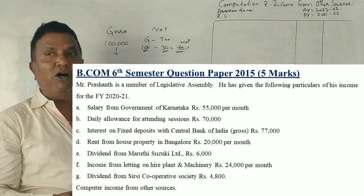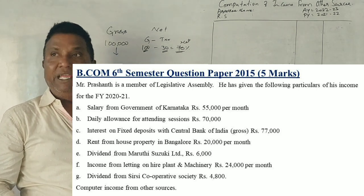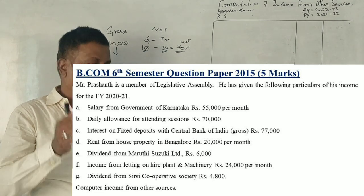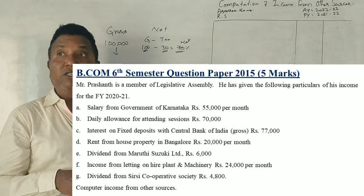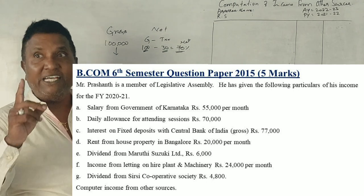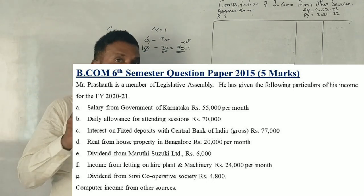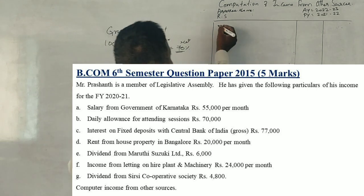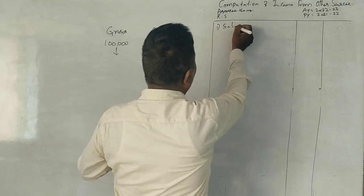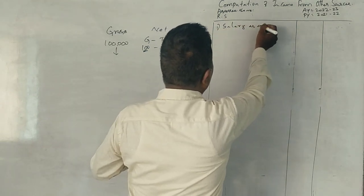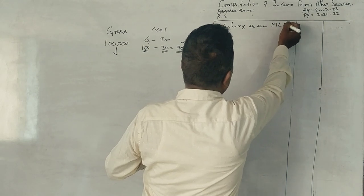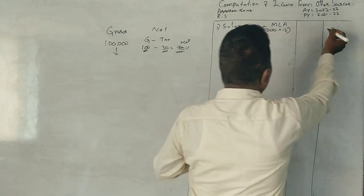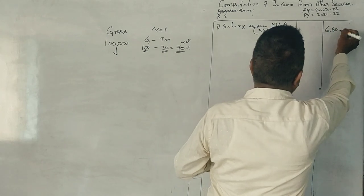Salary from Government of Karnataka. See, being an MLA, he is receiving salary from Government of Karnataka of 55,000 per month. I told you salary in the hands of MLA is peacefully taxable. So salary as an MLA, 55,000 into 12 equals 6,60,000.